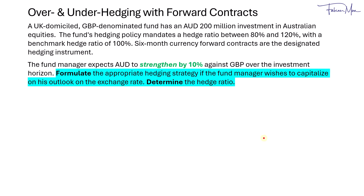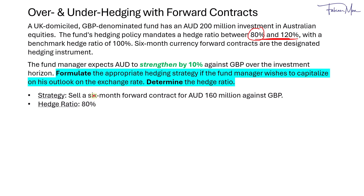In the final scenario, if the fund manager expects the Australian dollar to strengthen by 10% against British pounds, what would be the hedging strategy? Most people would say if the Australian dollar were to strengthen, we wouldn't have to hedge. But you can't, because the policy requires you to maintain a hedge ratio between 80% and 120%. So the lowest you can go would be 80%, because you can't breach your mandate. In this case, the strategy would be to sell a six month forward contract for 160 million Australian dollars against pounds — that's 80% times 200 million.